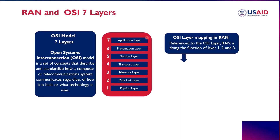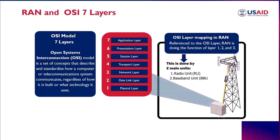Each of these layers plays a critical role in the operation of a Radio Access Network system, enabling mobile devices to connect to the wider network and access a wider range of services. If you map the OSI layer to the Radio Access Network and divide the layers into the main divisions — the Radio Unit and the Baseband Unit — you can see that layers one, two, and three can be found in these components, while the other layers are found in other parts of the network.